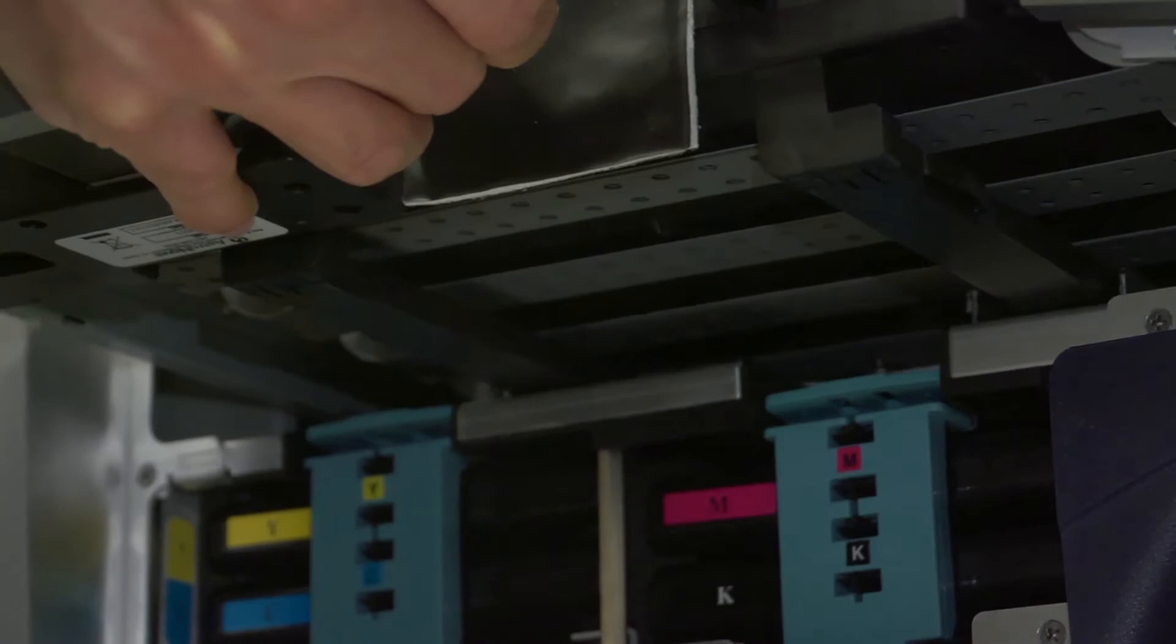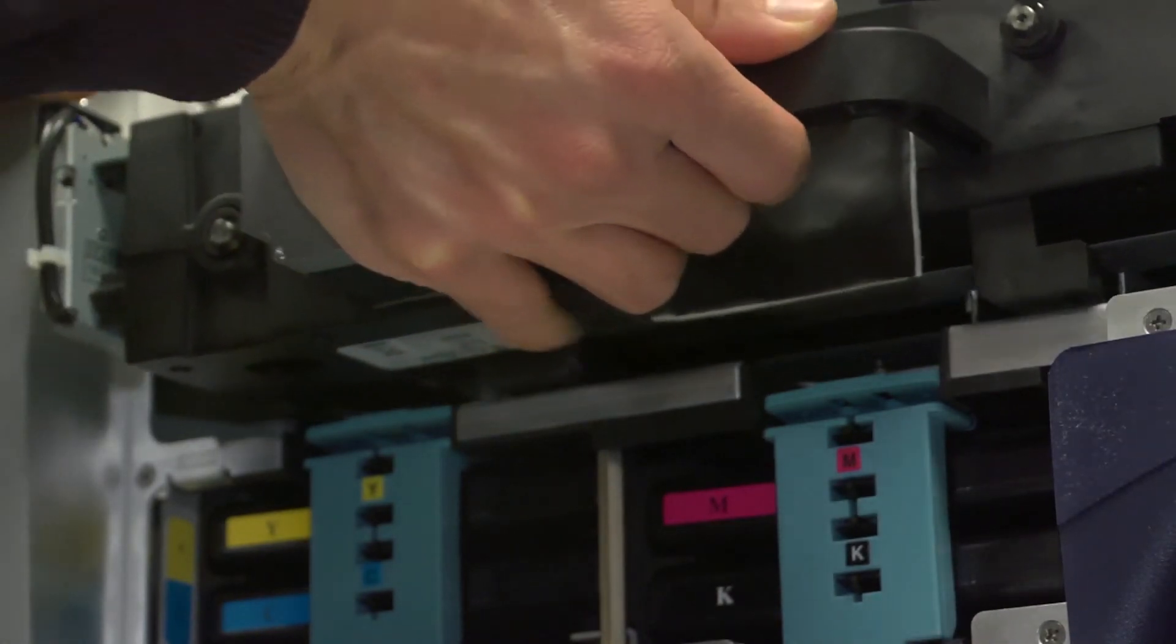Slowly align the transport unit and slide it back into the printer, pushing it back until it's just past the metal bracket to reseat it.